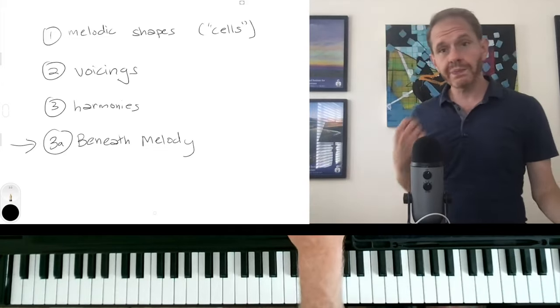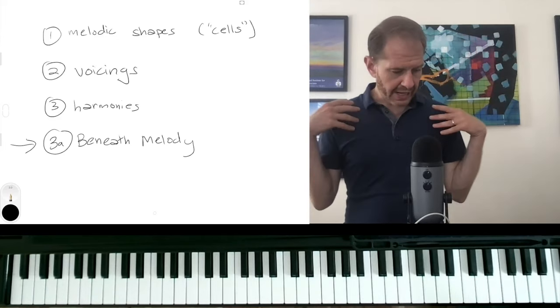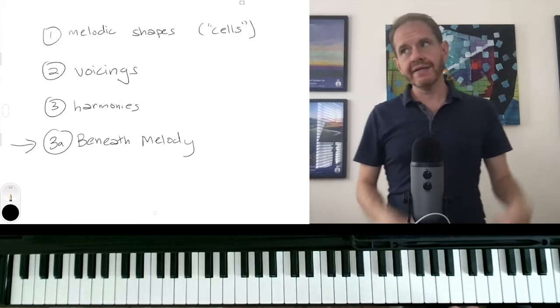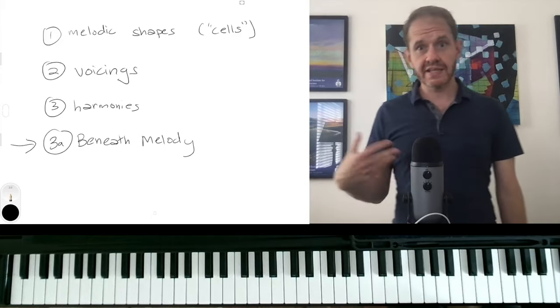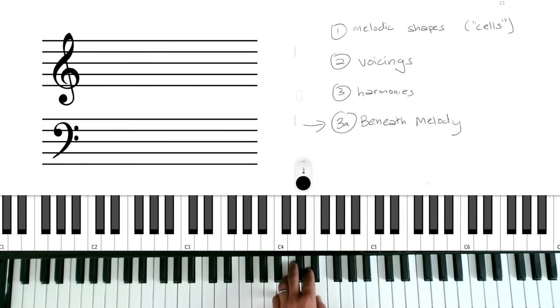So we're going to start over here on 3A of planing beneath a melody. And so when we're planing beneath a melody, we're going to start with a shape. And then move it exactly the same intervals that the melody moves. So let's take an easy example. Let's take Mary Had a Little Lamb. So let's say my shape is going to be a major triad in first inversion. That's second inversion. I am an amateur. Major triad in second inversion. That's what we're going to do. With the E on top. So it's a C major triad.